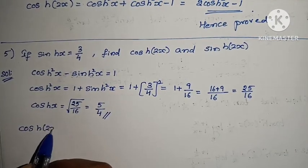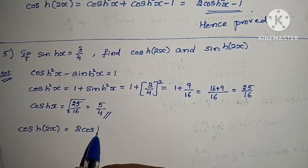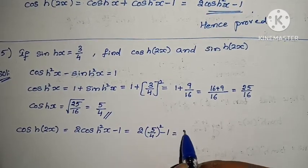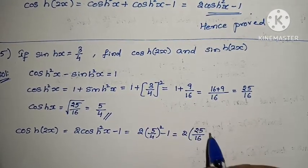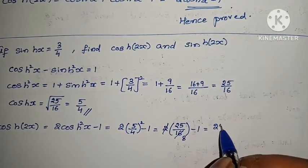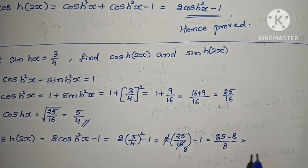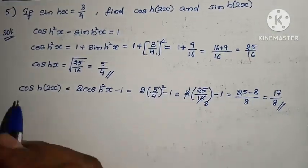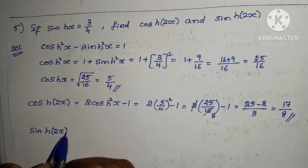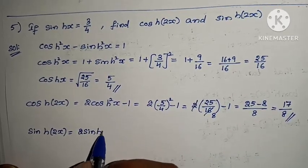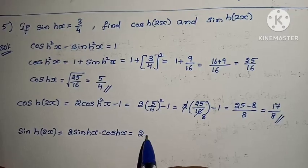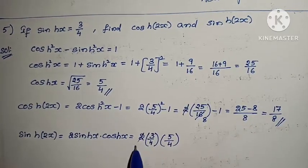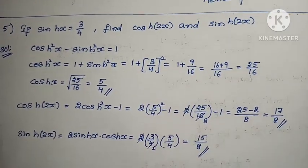cosh(2x) = 2cosh²(x) − 1 = 2 × (5/4)² − 1 = 2 × 25/16 − 1 = 50/16 − 1 = (50 − 16)/16 - wait, = 25/8 − 1 = (25 − 8)/8 = 17/8. Now sinh(2x) = 2sinh(x)cosh(x) = 2 × (3/4) × (5/4) = 30/16 = 15/8. Problem complete.